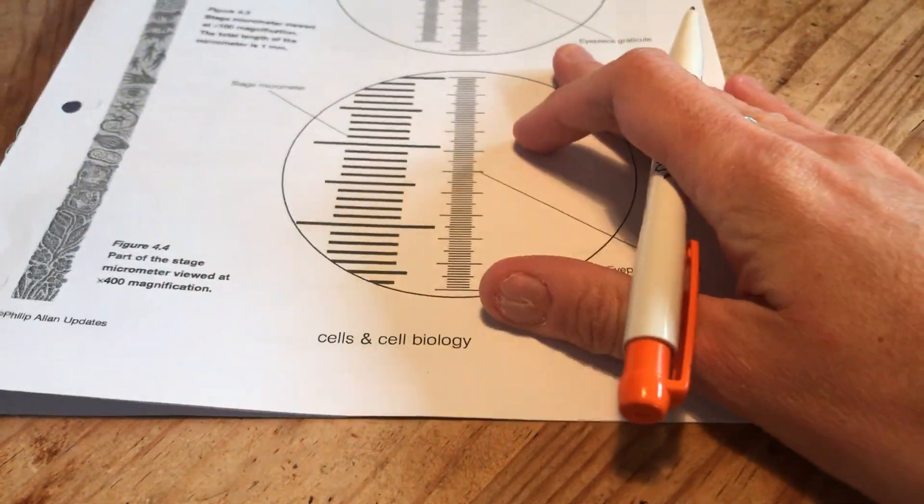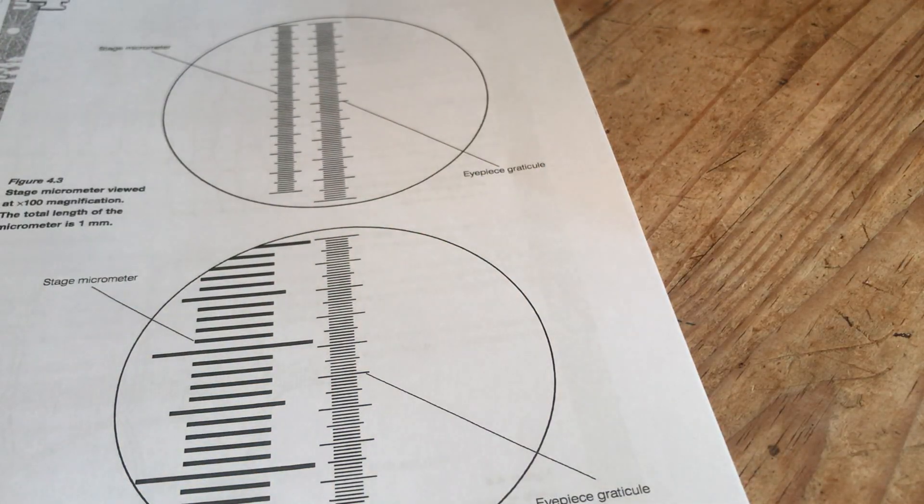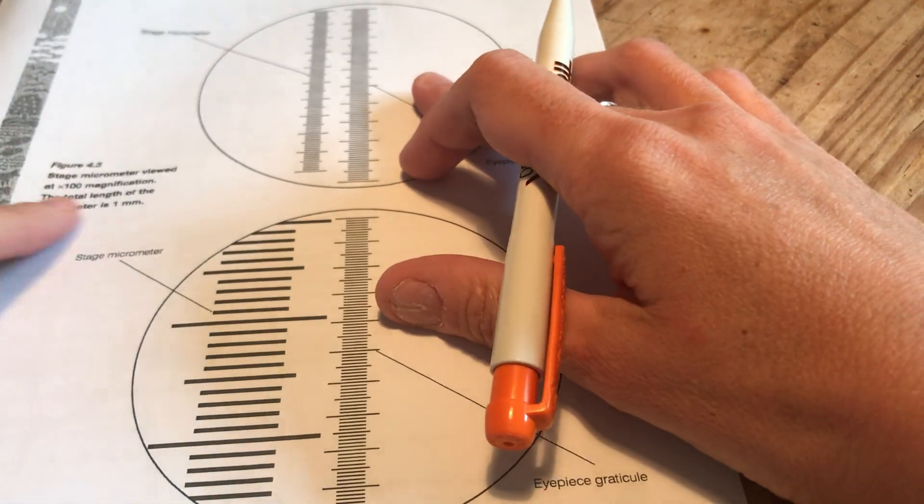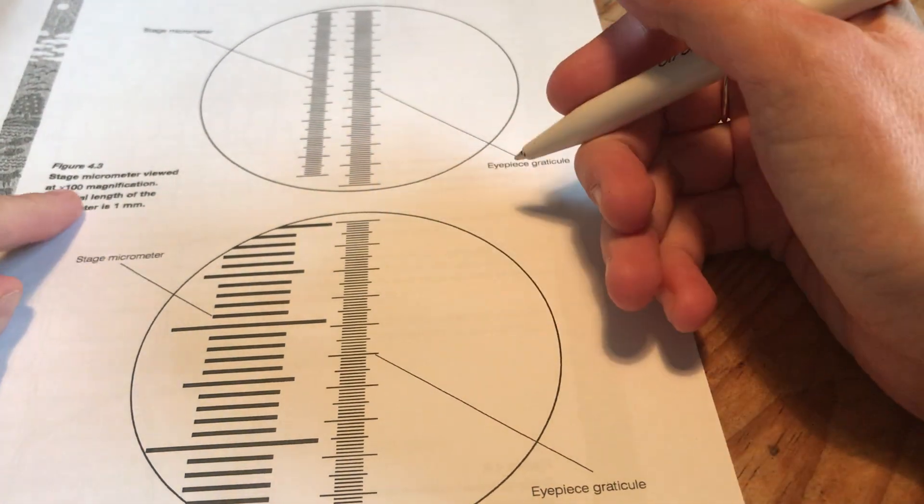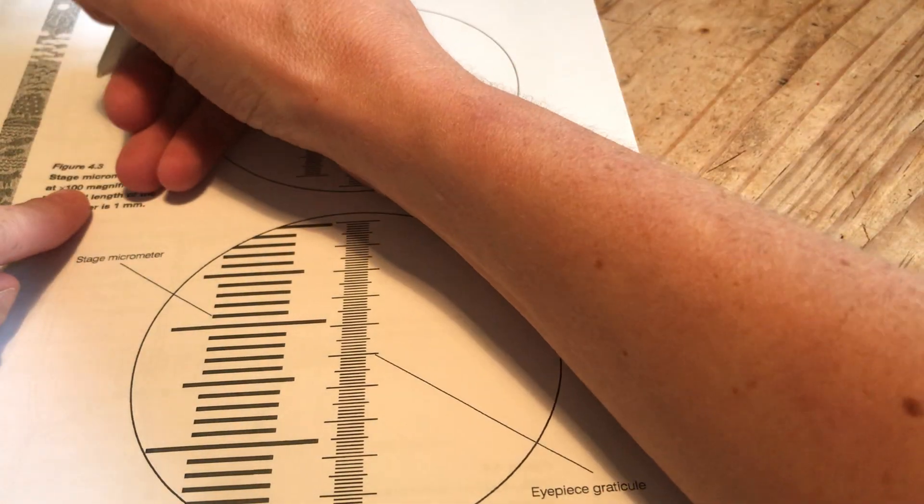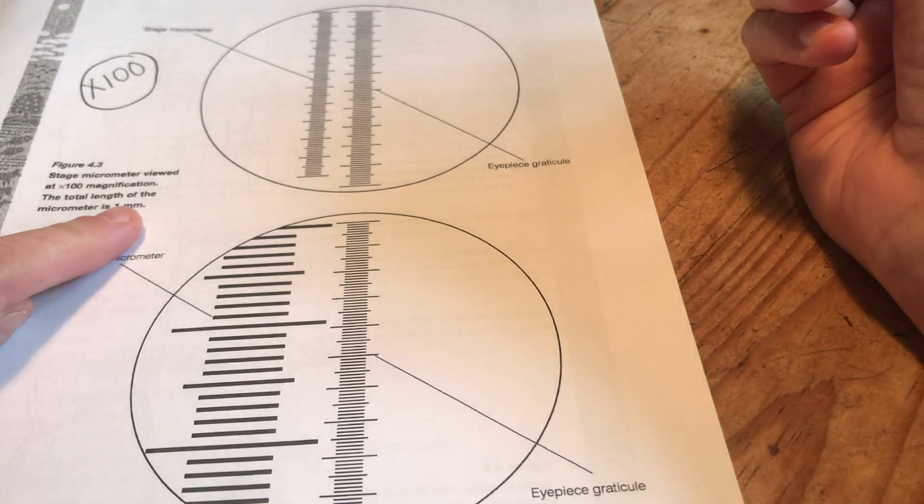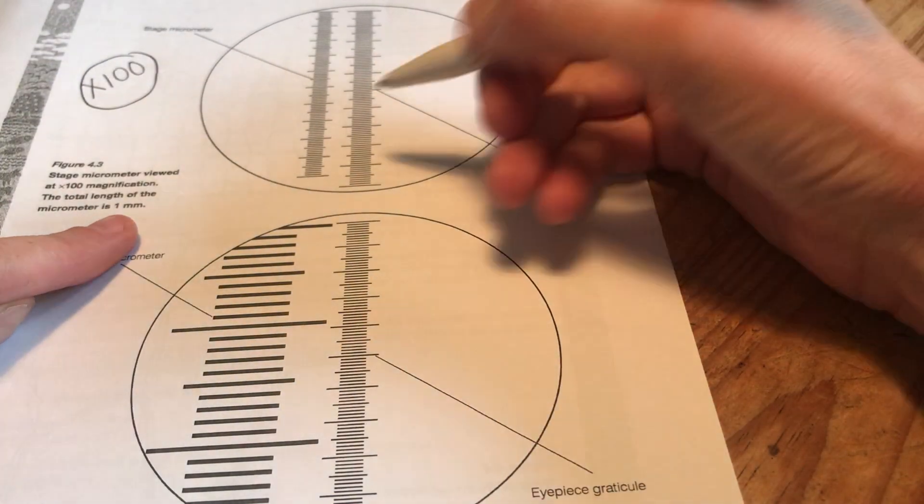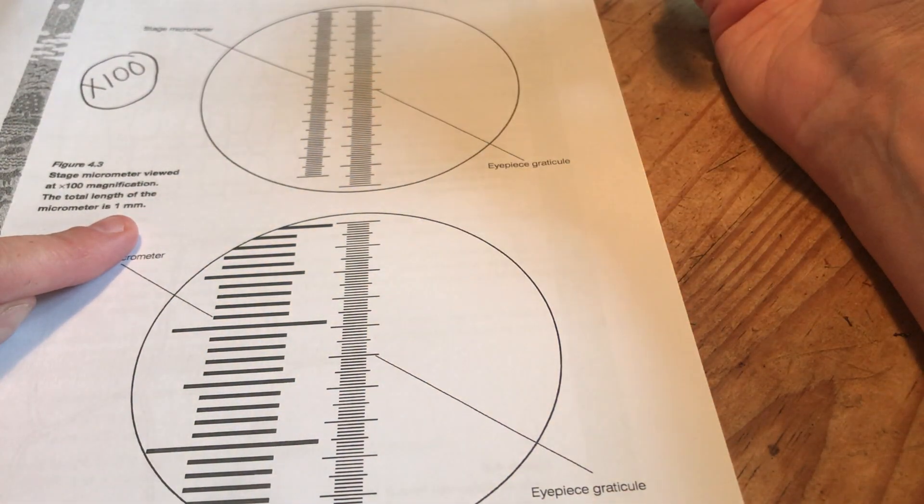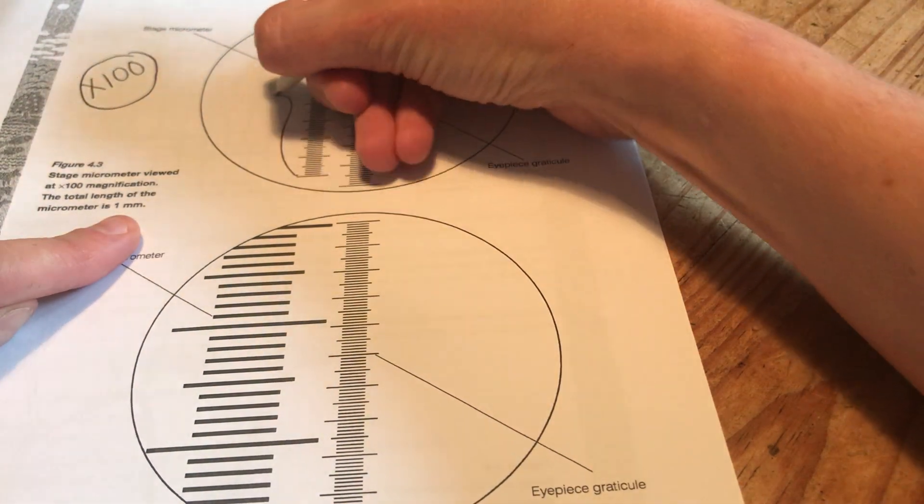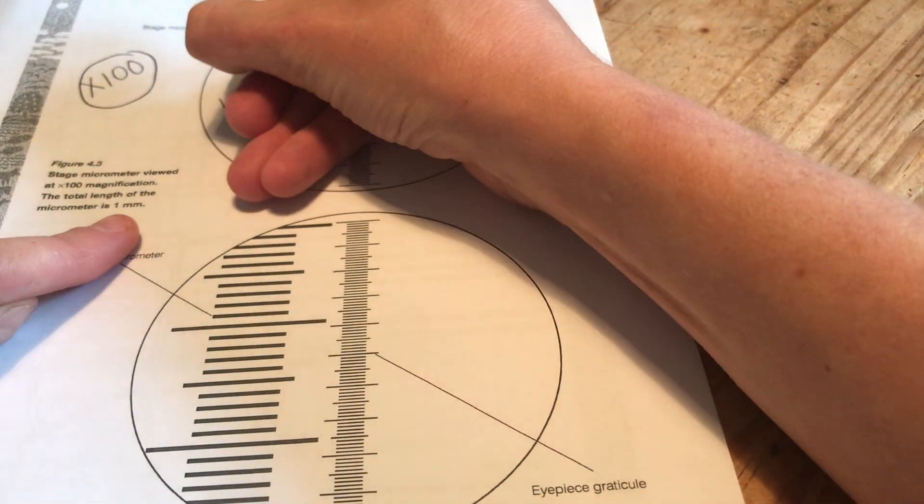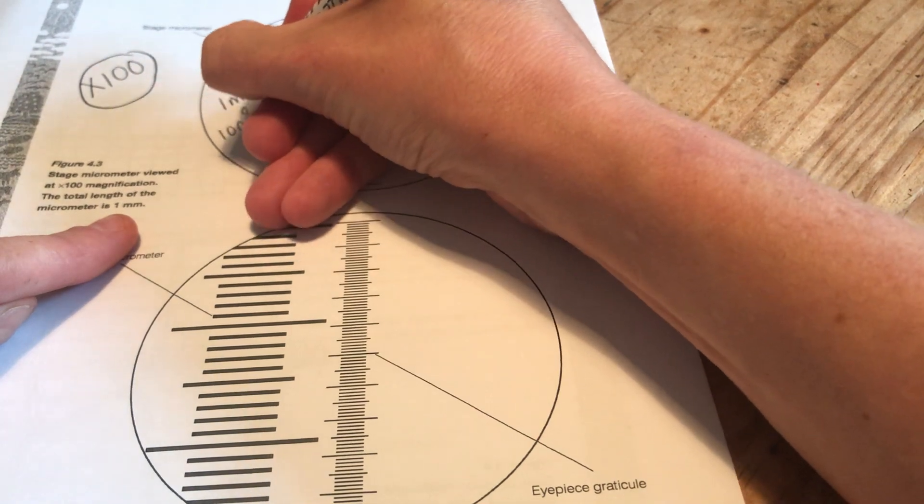Right let's find figure 4.3. So I know from figure 4.3 it tells me here it's been viewed at times 100 magnification. I'm just going to write that big there to help me remember later on and it tells me the total length of the micrometer is one millimeter or a thousand micrometers.